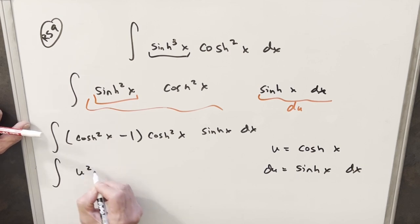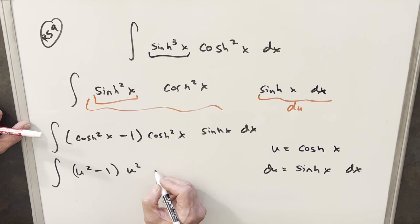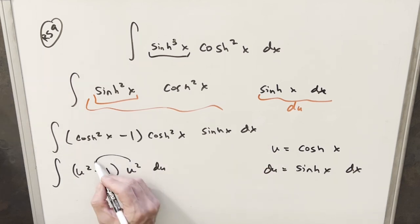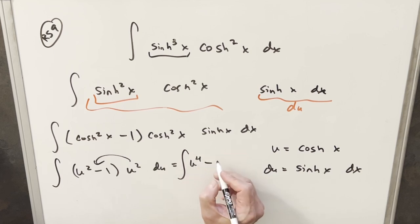So then doing the substitution, this here is going to be just u squared minus one. This is going to be u squared, and this is going to be our du. And so I can just distribute that in. We're going to be integrating u to the fourth minus u squared du.